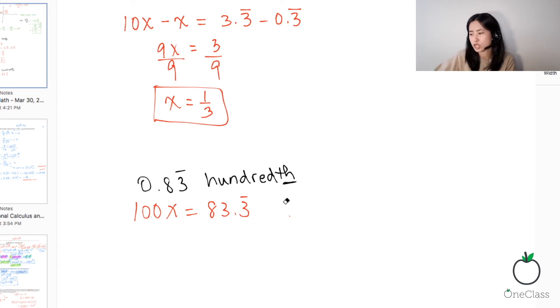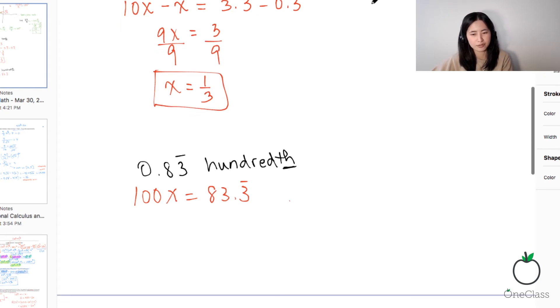So yeah, this type of question, you just have to look at the number and kind of see how it would get rid of the decimal number that's repeating. Okay, great. So that would be 10x. So we have 10x because when you move this here, you would get 8.3 and that's repeating at 3.